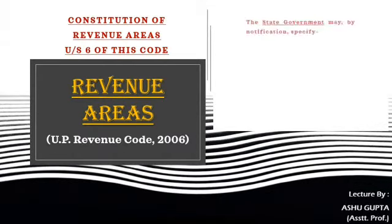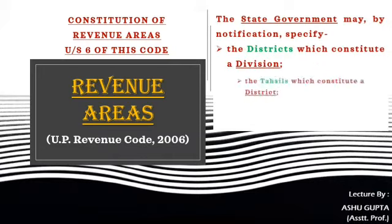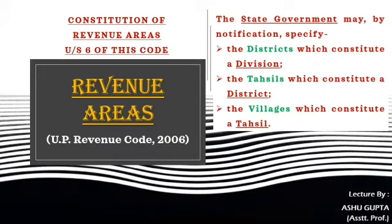Under Section 6 of this code, which deals with the constitution of revenue areas, the state government may by notification specify the districts which constitute a division, the tahsils which constitute a district, and the villages which constitute a tahsil.